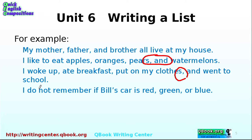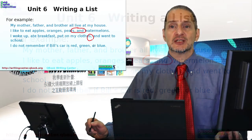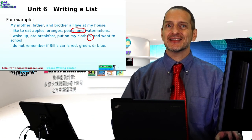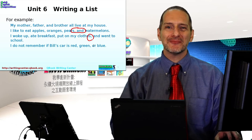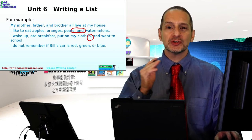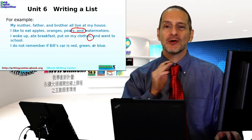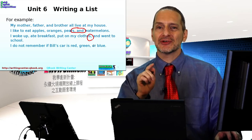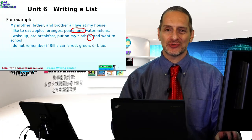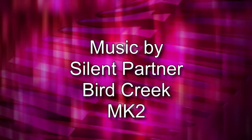One more example: 'I do not remember if Bill's car is red, green, or blue.' So that's the serial comma — easy to make a list. Remember: no space before a comma, one space after, and include a comma before the last item. See you next time.